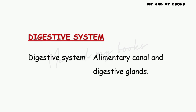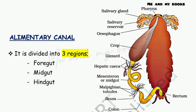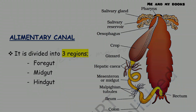The first organ system is the digestive system of cockroach. The cockroach digestive system includes the alimentary canal and digestive glands. The alimentary canal is divided into three regions: foregut, midgut, and hindgut.